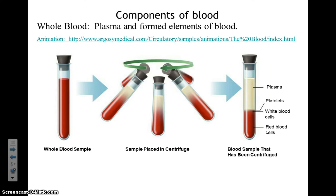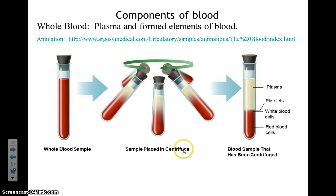In this video I will talk about the components of whole blood. When whole blood is rapidly spun by using a centrifuge, the blood will separate based on its different physical properties. Three main areas include blood plasma, the buffy coat made up of platelets and white blood cells, and red blood cells.